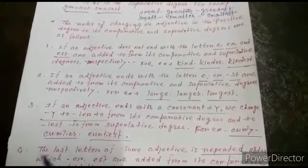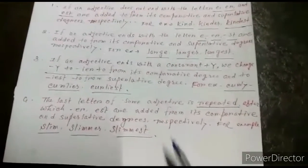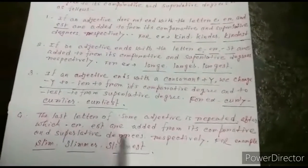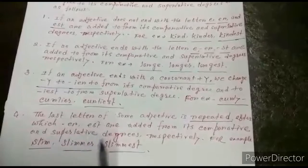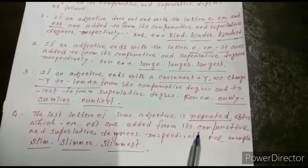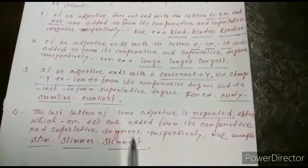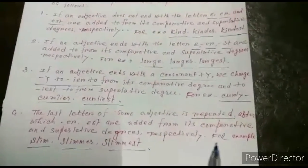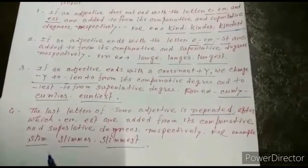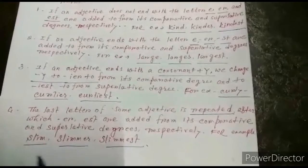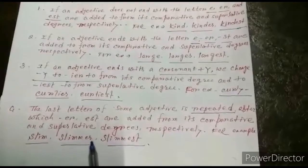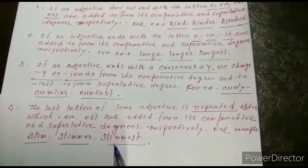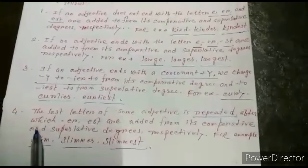Number 4: The last letter of some adjectives is repeated, after which ER and EST are added to form the comparative and superlative degrees respectively. For example: slim → slimmer → slimmest (S-L-I-M-M-E-S-T).